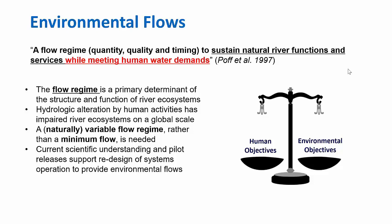Ecosystems evolve with flows that change throughout time — within a year and among different years. So we should not be thinking about a flat line and what the minimum flow will be. It is basically a flow that has to change within the year and throughout different years.